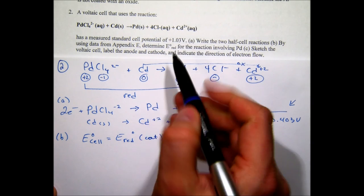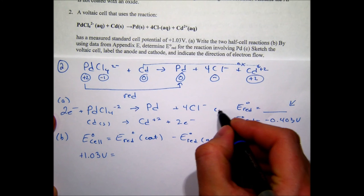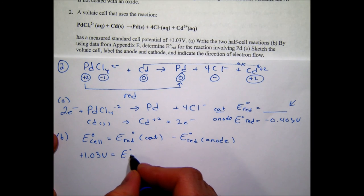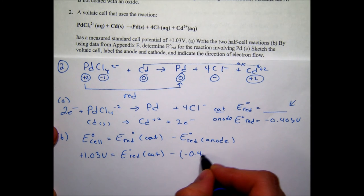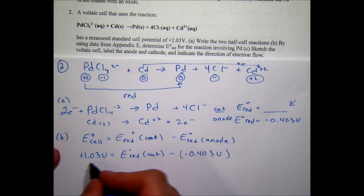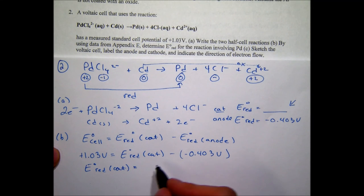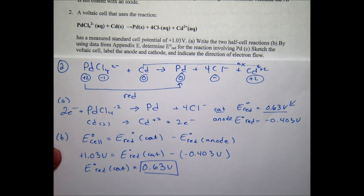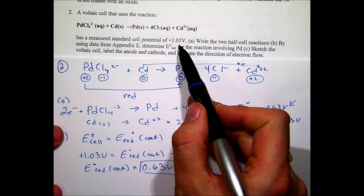The cell potential is +1.03 V. Reduction takes place at the cathode. Solving: E°cell = E°cathode − E°anode. So E°cathode = E°cell + E°anode = 1.03 + (−0.403) ... wait, working it through: E°cathode must equal 0.63 V. Check: 0.63 − (−0.403) = 1.033 ≈ 1.03 V. Confirmed.